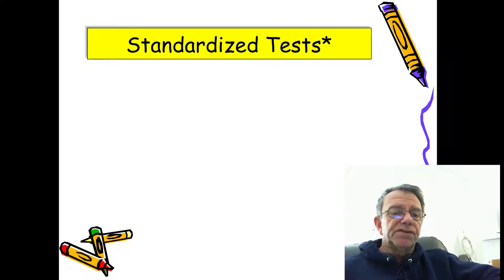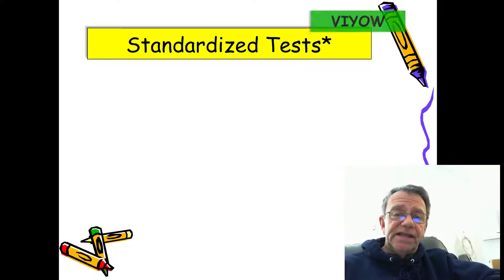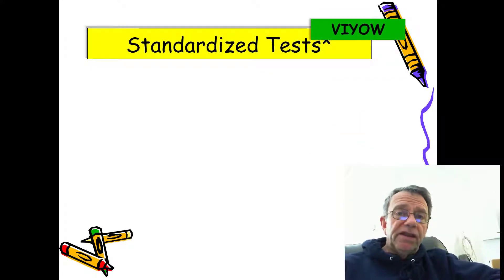Simply put, a norm-referenced test compares test results with a sample of students that have already taken the test. You're familiar with many of these: the SATs, the ACTs, the GREs, and any other tests that compare your scores to a normal curve and other students who have taken the test.